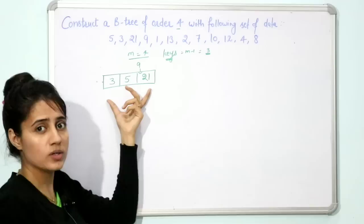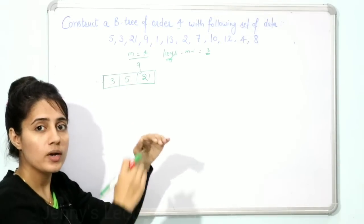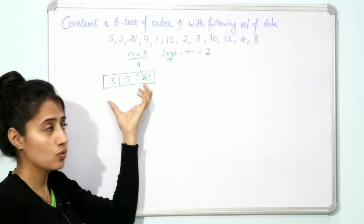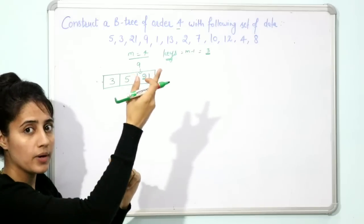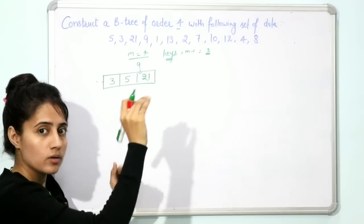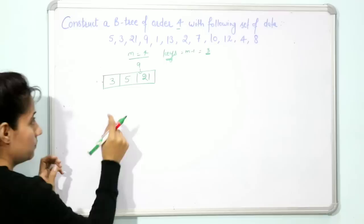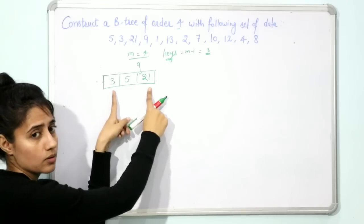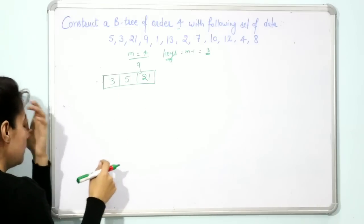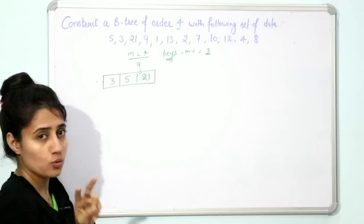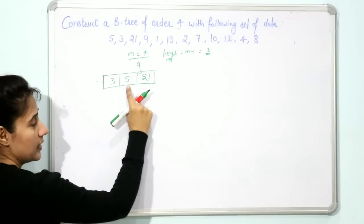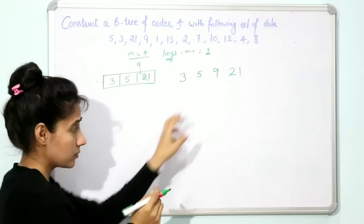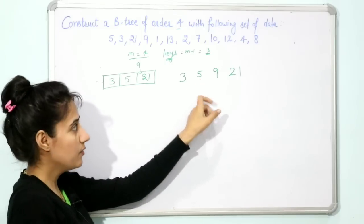To split, we find the median — the middle element of this node. That middle element goes one level up to become the root. We have 4 numbers: 3, 5, 9, 21. Since we have an even count, there are two possible middle elements: 5 or 9. If you take 5 as the middle element, the left child is 3 and the right child is [9, 21]. If you take 9, the left child is [3, 5] and the right child is 21.